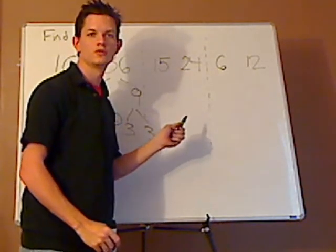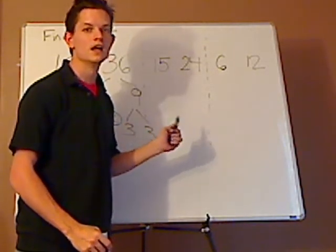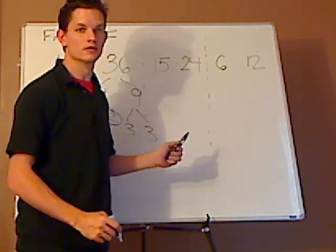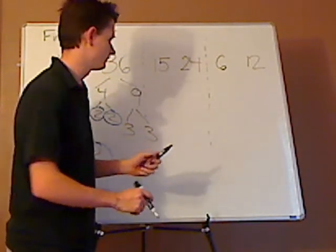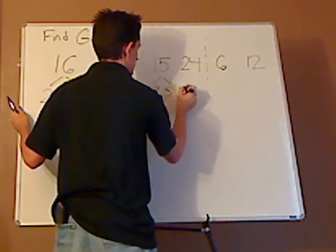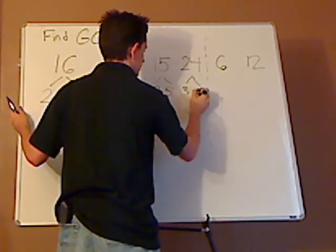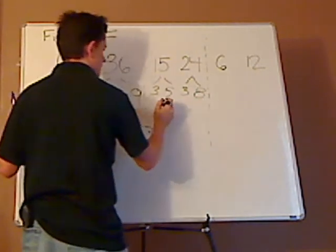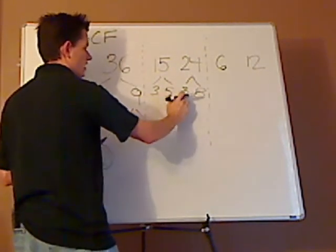If I go to 24 and 15, I know both of them are divisible by 3. So, let me split it up right away. 3 and 5, and then 3 and 8. Know something about the 5 and the 8?